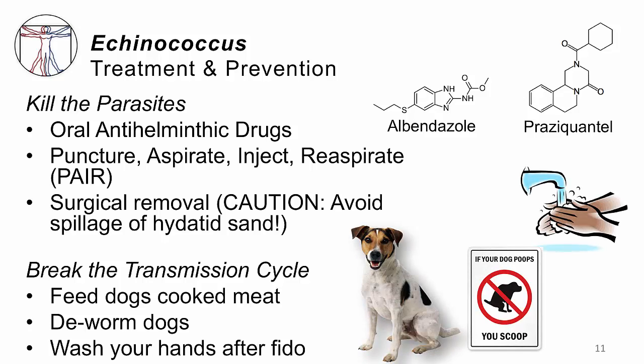In terms of breaking the transmission cycle, we always want to cook the meat before we feed it to dogs. We do have a way to treat the dogs themselves — to deworm them. And the last line of defense is always to wash your hands after you've played with Fido before you eat your meal.